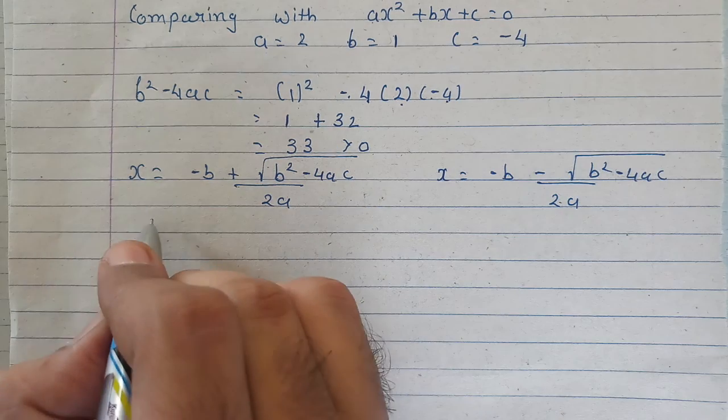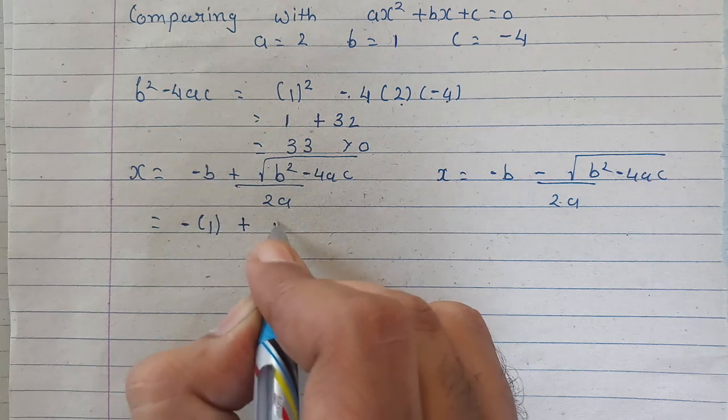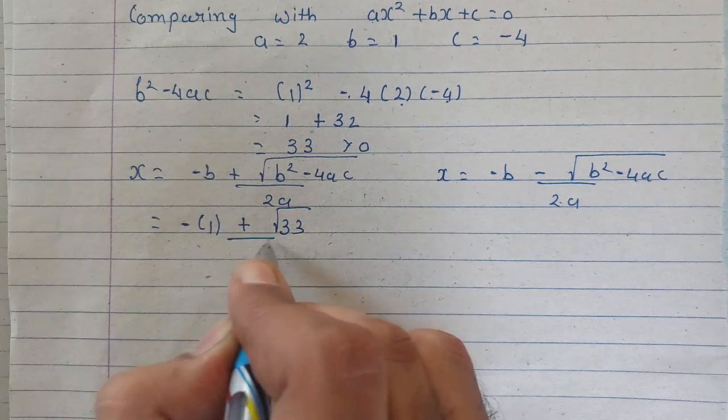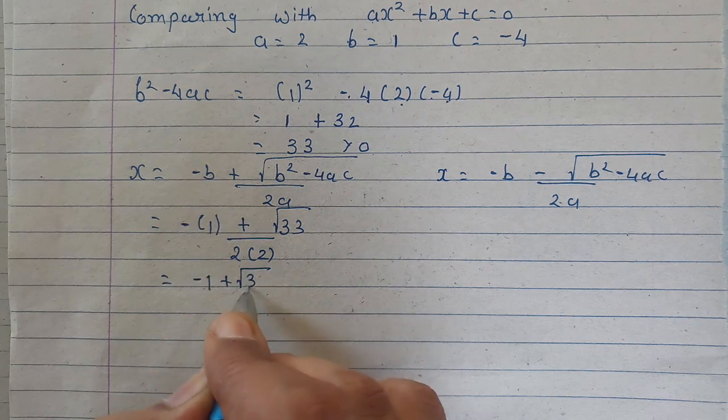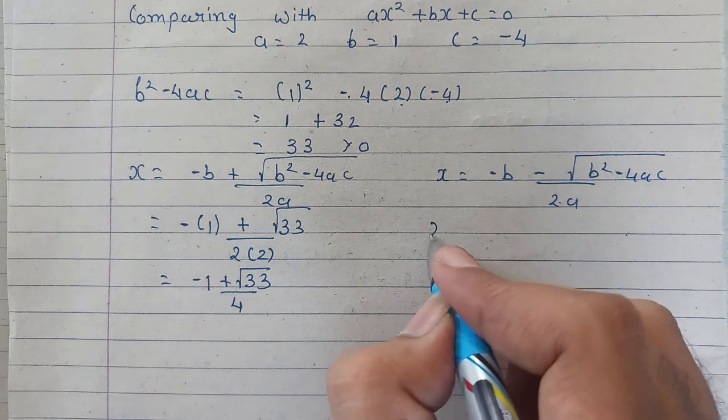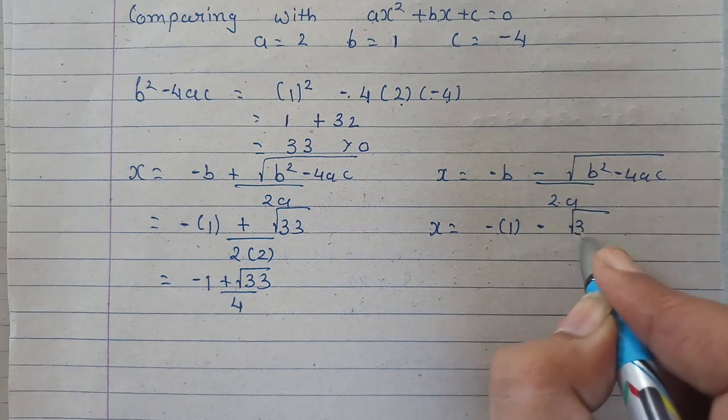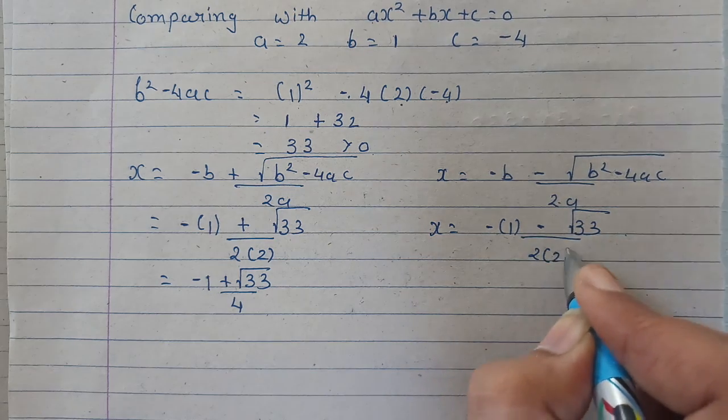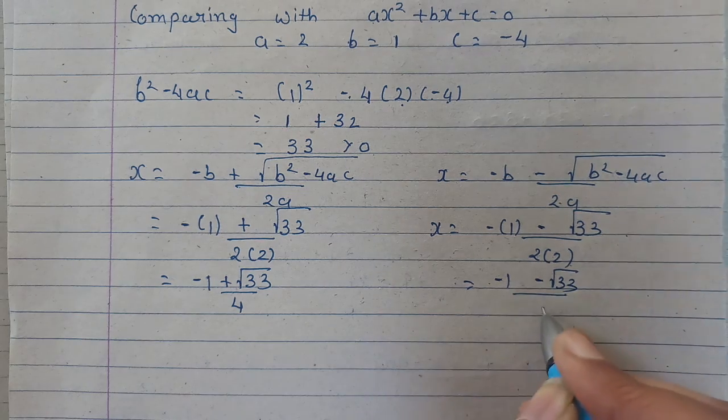We'll put the values. Minus b ki jaga pe 1 plus under root 33 upon 2 into 2. Minus 1 plus root 33 upon 4. Similarly, here x is equal to minus 1 minus under root 33 upon 4.